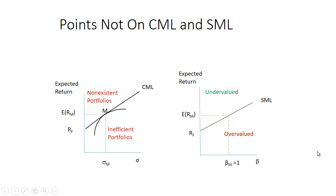With the security market line, securities can plot both below and above the line. A security below the line is overvalued: for the level of risk you're taking, you're getting too low a return, or paying too high a price. Securities that plot above the security market line are undervalued: for the level of risk, you're getting a higher expected return than warranted, meaning the security is underpriced. This clarifies the key difference between the capital market line and the security market line.